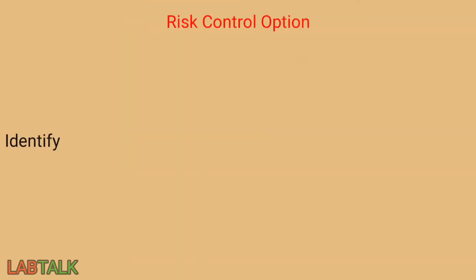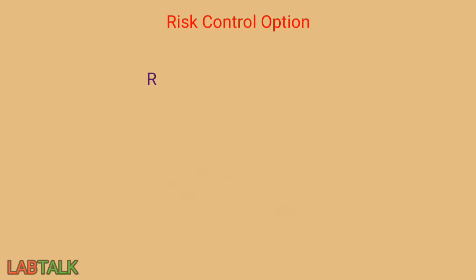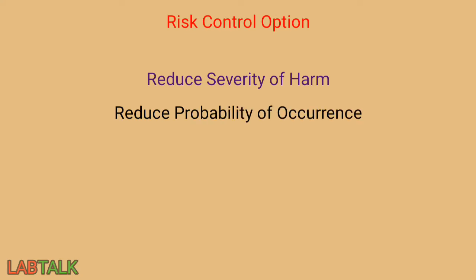The laboratory shall identify and implement verified risk control measures that reduce the risk to an acceptable level or can completely eliminate the risk. The risk control measures can reduce the severity of the harm and reduce the probability of occurrence, or can be useful in both. While selecting risk control measures, we have to prioritize some of the measures.